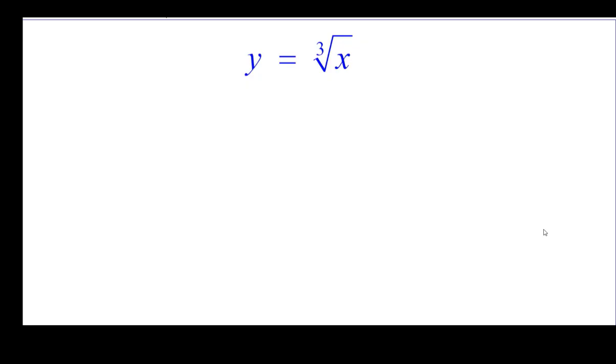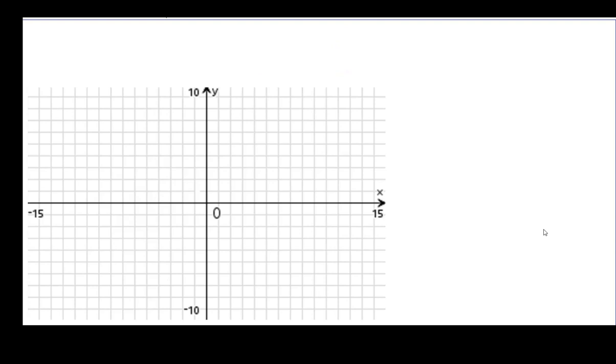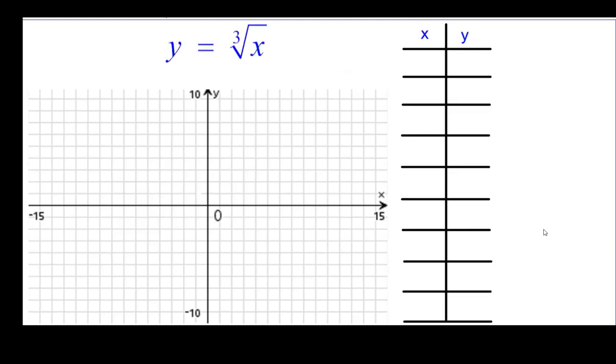So y equals the cube root of x. Start with a grid. We encourage you to make a table. And these are the five values that we are going to use to start. You may wonder why we picked those numbers. We're trying to find the cube root of numbers, so we're looking for perfect cubes.